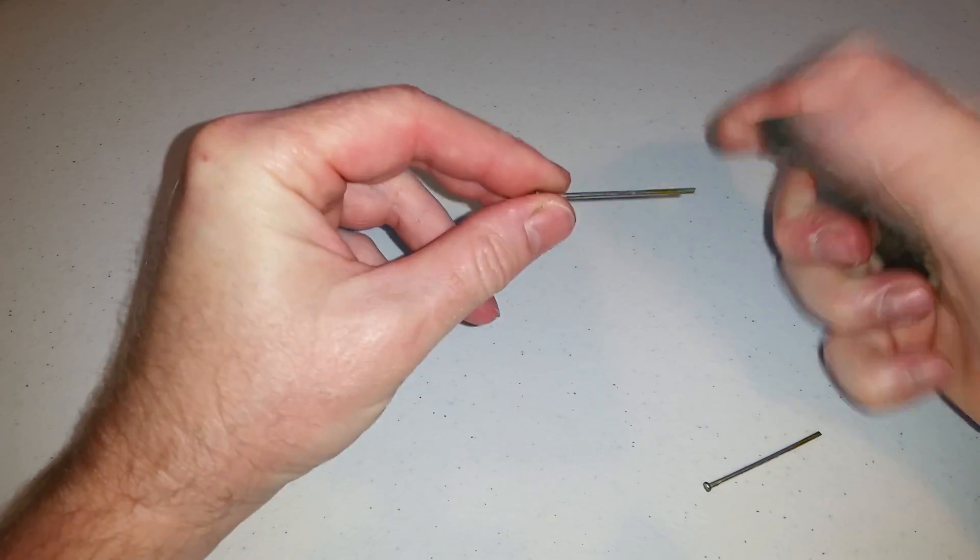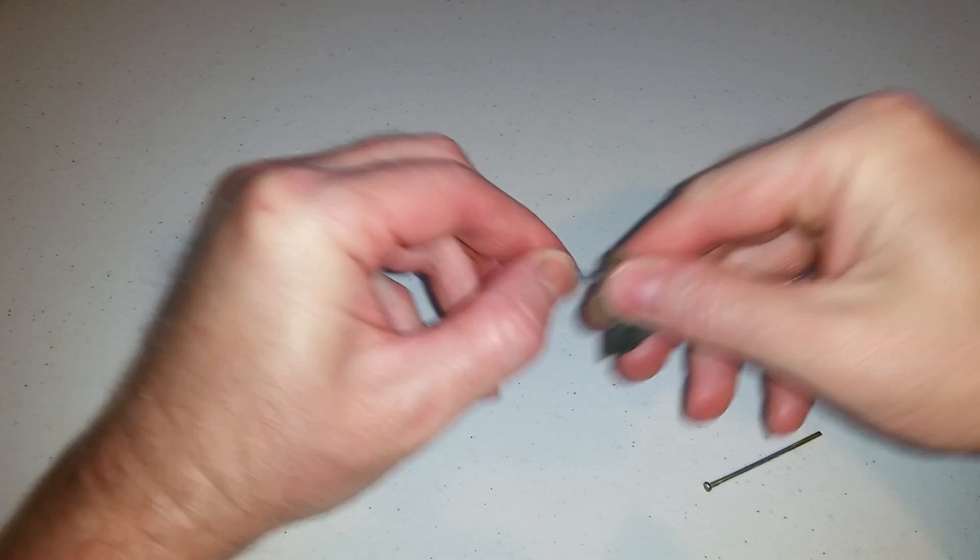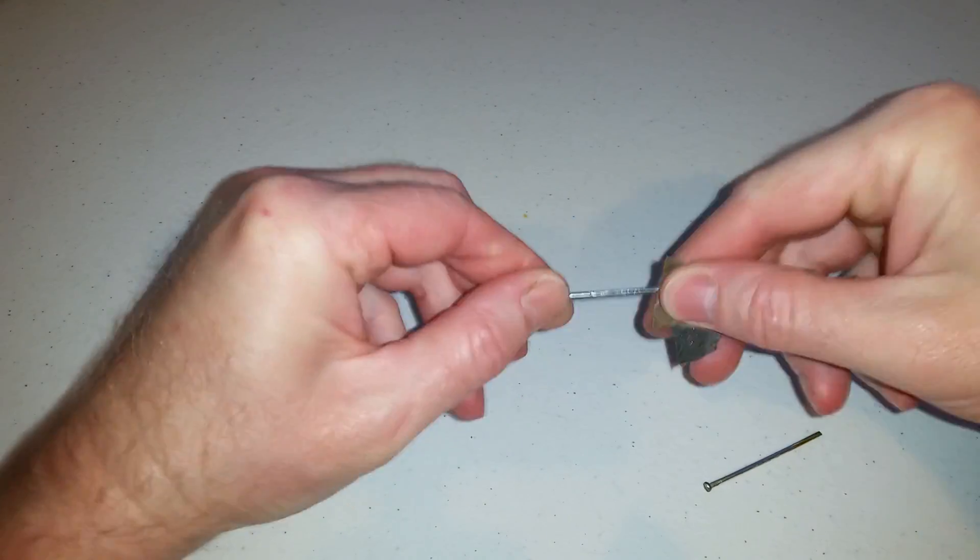Now that you have your nails separated, take some fine grit sandpaper and clean up the coating on here.